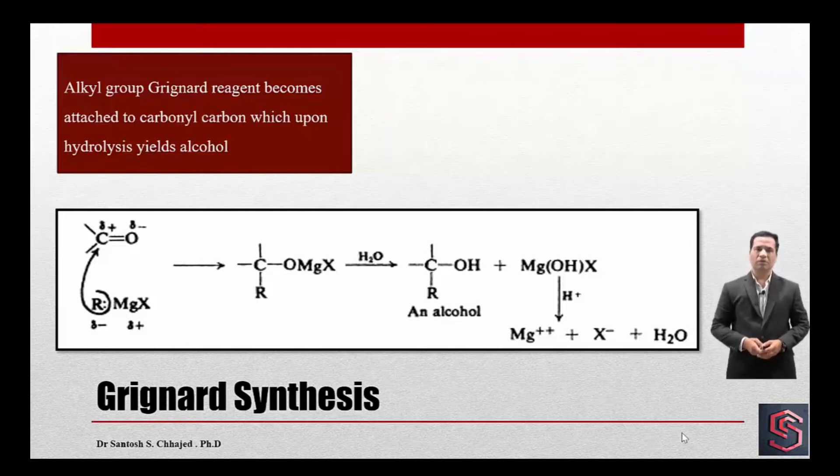Now, a pi electron of carbonyl group will become migrated onto electronegative oxygen. And as a consequence of that, oxygen will coordinate its electron with the magnesium which is shown in the reaction. When it reacts with water, formation of the corresponding alcohol takes place.